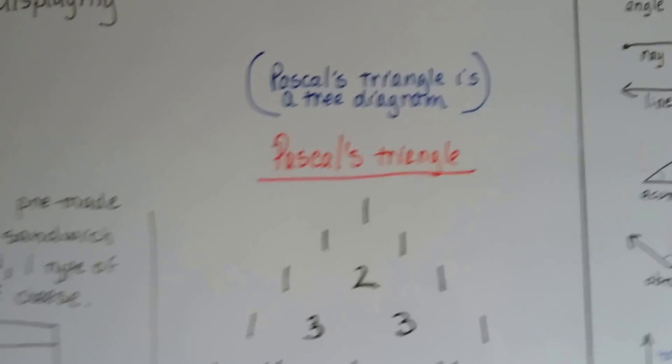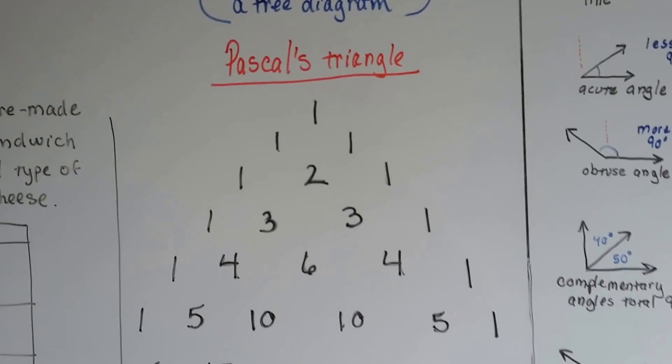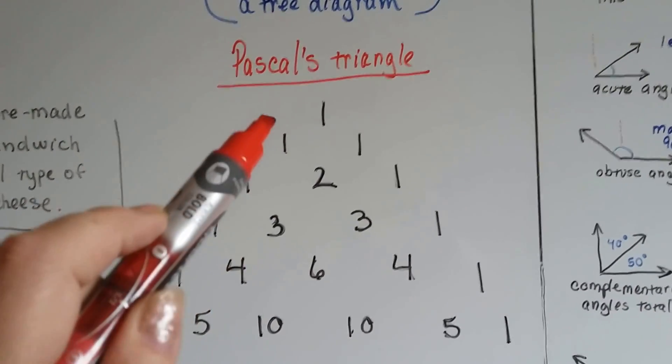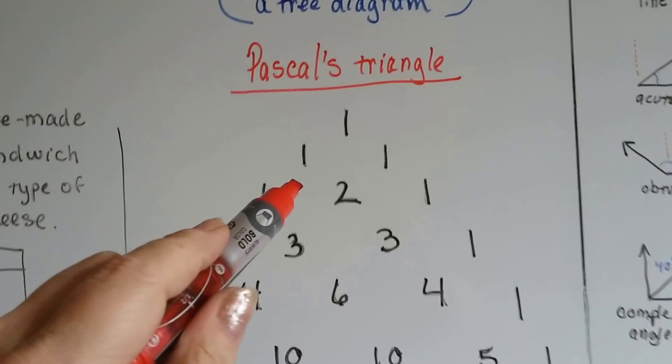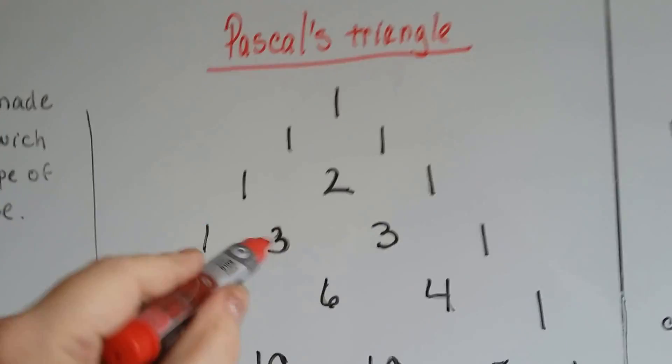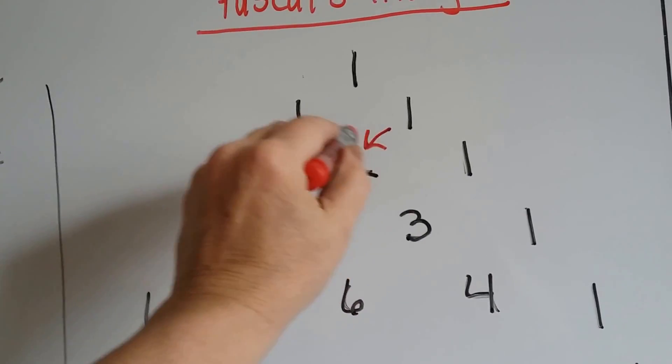Now, there's a very famous tree diagram called Pascal's Triangle. And it goes like this. You start with a one, and then you say, what is one plus one? One plus one equals two, see?